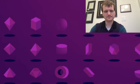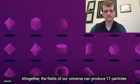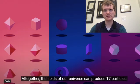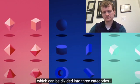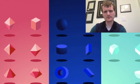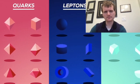Altogether, the fields of our universe can produce 17 particles, which—earlier it showed E with a plus, that's actually a positron—divided into three categories, the leptons, and the quarks, and the bosons.